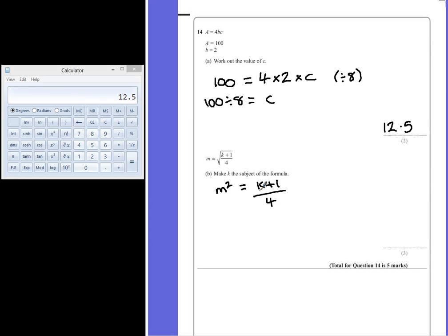If we were calculating this stage, we'd do K plus 1 and then divide by 4. To undo this step, we multiply both sides by 4, then subtract 1 from both sides, leaving us with 4M squared minus 1 equals K.